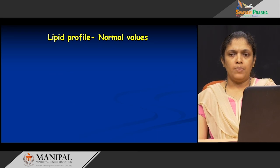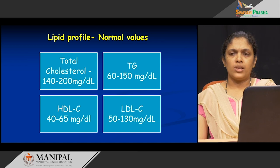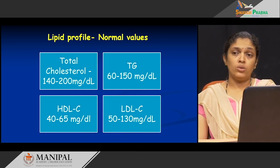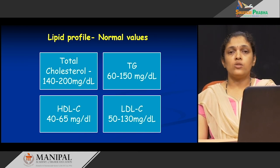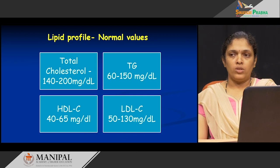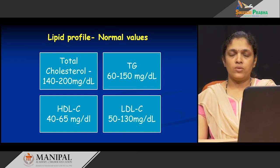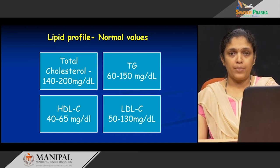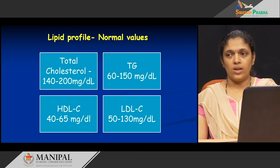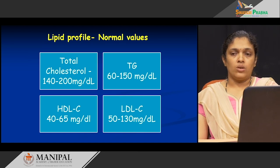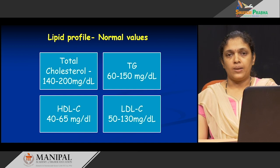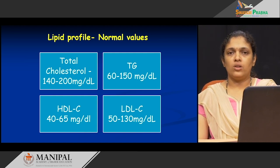Looking at normal values: total cholesterol is appropriate between 140 to 200 milligrams per deciliter. If it is more than 200 mg/dL, there is a chance of having cardiovascular or coronary artery disease. For triacylglycerols (TG), the range is between 60 to 150 mg/dL. Having low levels of triacylglycerol is always good. For HDL cholesterol, the range is 40 to 65 mg/dL. Having more amounts of HDL cholesterol is always better, because HDL cholesterol is the good cholesterol.